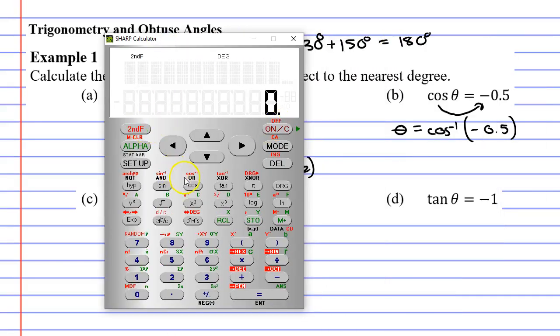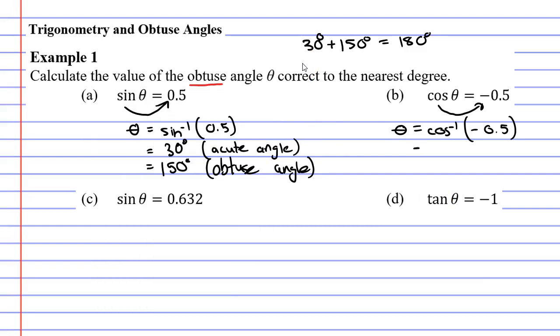We go second function cos bracket and we type in negative 0.5 close our brackets equals and we get 120. So theta equals 120 degrees and we actually don't need to go any further because 120 degrees is already an obtuse angle.